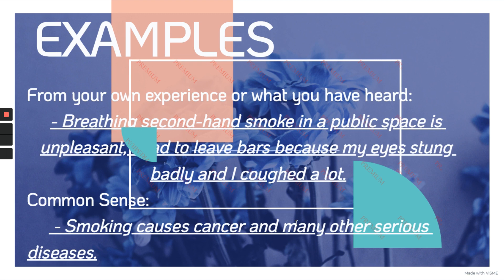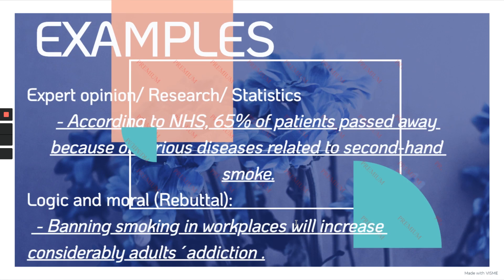We can also use common sense and logic. 'Smoking causes cancer and many other serious diseases' — that's a strong argument too. Some other examples are based on expert opinions, research, different types of studies and statistics. According to the National Health Security, 65% of patients pass away because of serious diseases related to secondhand smoke. These are some of the strongest forms when it comes to arguing and reframing somebody, especially because we are basing our claims on expert opinions. It's very similar to arguments based on logic and moral grounds.